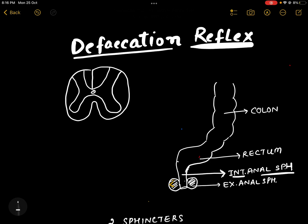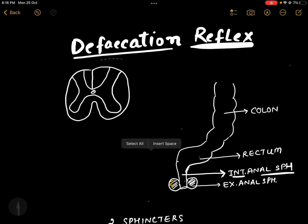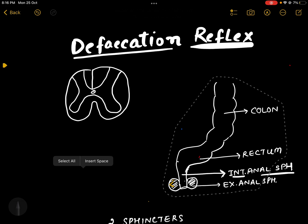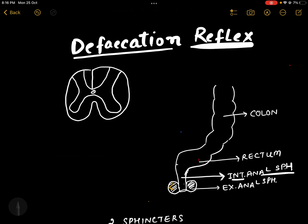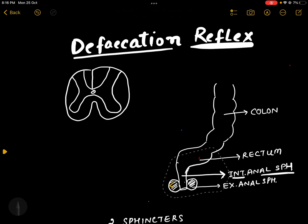In this section we'll discuss the defecation reflex. Looking at a simple diagram, we can see a section of the spinal cord and part of the gastrointestinal tract. This is the colon — specifically the descending colon — and this S-shaped part is the rectum. These are the parts of the anus: the internal anal sphincter and the external anal sphincter.